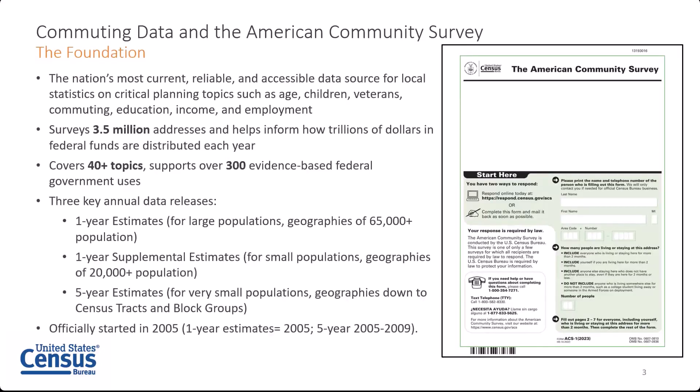The ACS is the nation's most current, reliable, and accessible data source for local statistics on critical planning topics such as commuting. The survey randomly samples approximately 3.5 million addresses each year. These data are collected continuously throughout the year to produce annual social, economic, housing, and demographic estimates. The Census Bureau typically releases three different sets of data estimates from the ACS each year: one-year estimates for geographies of 65,000 or more, one-year supplemental estimates for geographies of 20,000 or more, and five-year period datasets for all geographies down to the census tract and block group for some tables.